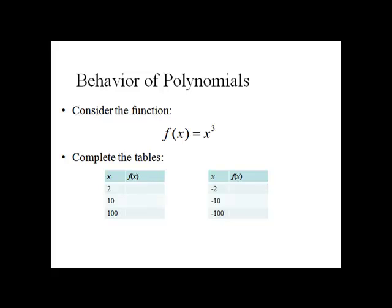End behavior determines what the function is doing, what its outputs are doing as the inputs get larger positive values or larger negative values. What we'll do is we'll complete these two tables where the x values are becoming larger positive and also larger negative.